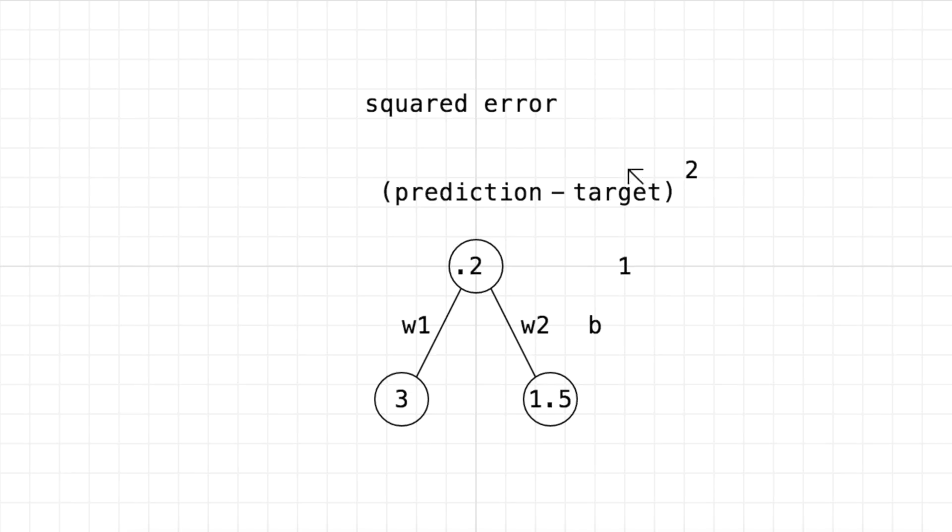Now to minimize the error, we can't change the target value, that's from the data. We can't change the two inputs, that's from the data. So the only thing we can change is the prediction. And the only way we can change the prediction is by changing the weights and bias of our neural network.